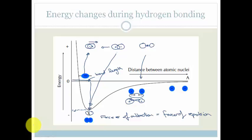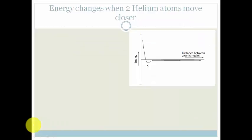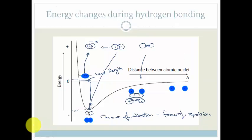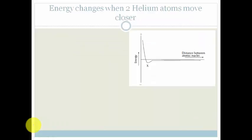Now let's look at helium, because we know that helium is special. Helium has full valence electrons — it's got two valence electrons, it doesn't need any more. It's got a full outer shell, it doesn't need to bond. And look at the difference in the graph. Do you see this graph for hydrogen goes all the way down and then goes up, whereas the helium graph basically stays straight and then goes up.